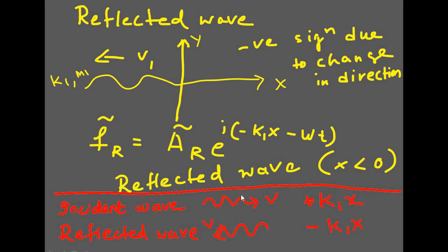What will happen to the reflected wave? Once you have an incident wave, it is likely to be either reflected or transmitted. The reflected wave travels in the opposite direction, so k and mu are the same but v1 is in the opposite direction. The reflected wave equation is f_r equal to A_r times e raised to i(-k1*x minus omega*t), for x less than 0.